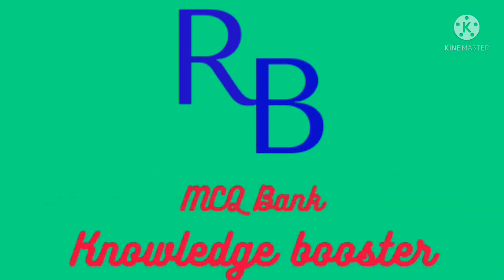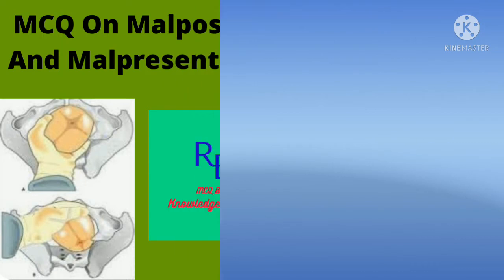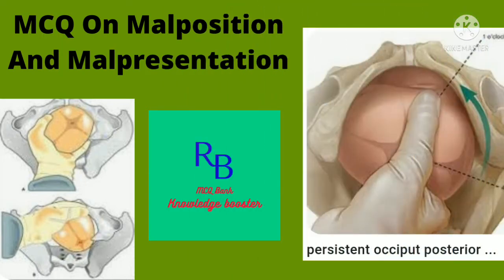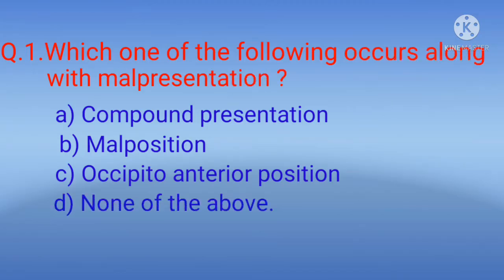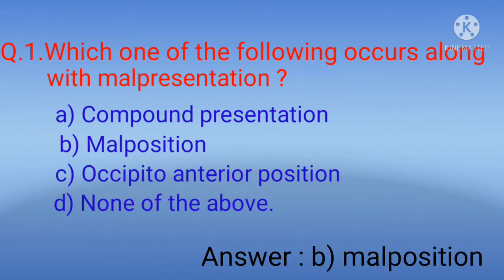Hello, welcome back to the channel RB MCQ Rank Knowledge Booster. Today I am going to discuss MCQs on malposition and malpresentation. Question 1: Which one of the following occurs along with malpresentation? Options: A) compound presentation, B) malposition, C) occipital anterior position, D) none of the above. The correct option is B) malposition, as malposition occurs along with malpresentation.